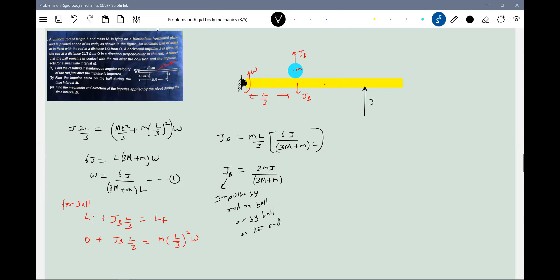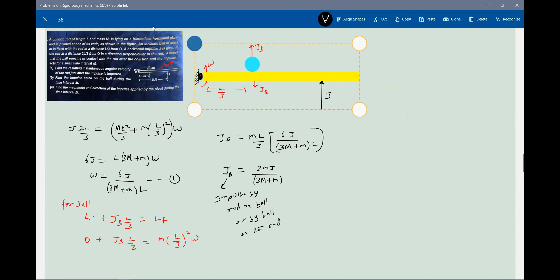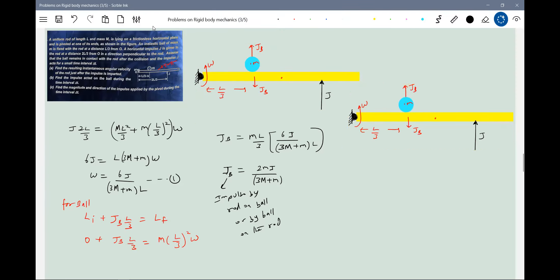Now this J B times L by three, what is L final? L final should equal again ML by three whole square into Omega. Do we know Omega? Yes we have, then I'll get the impulse by the rod on the ball or by the ball on the rod. One L by one third gets canceled. So this will become M L by three Omega, Omega is six J by...